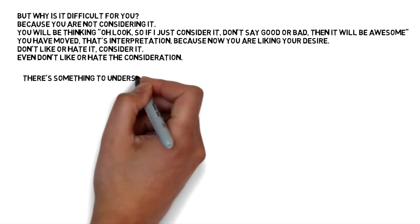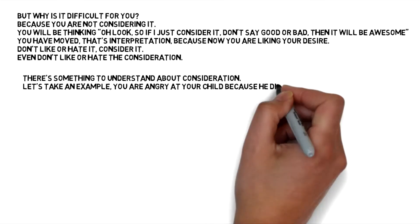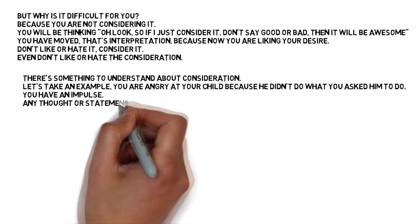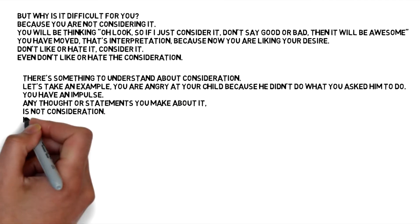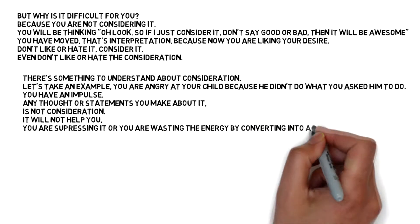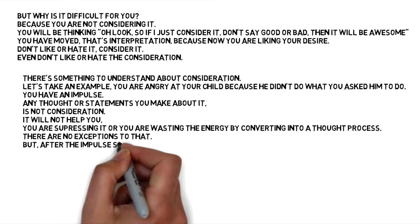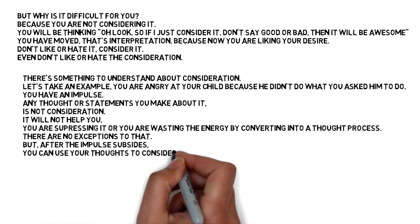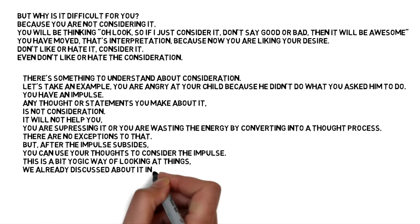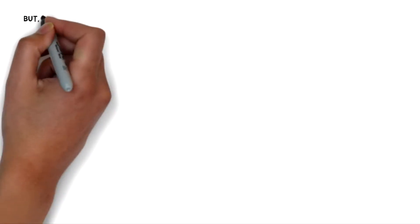There's something to understand about consideration. Let's take an example: you're angry at your child because he didn't do what you asked him to. You have an impulse. Any thought or statement you make about it is not consideration — it will not help you. You're either suppressing it, or wasting the energy by converting it into a thought process. There are no exceptions to that. But after the impulse subsides, you can use your thoughts to consider the impulse. This is a bit yogic way of looking at things, as discussed in Method 25, about trying to prevent the impulse. But it's a bit different than the yogic path.